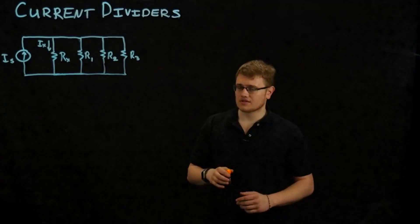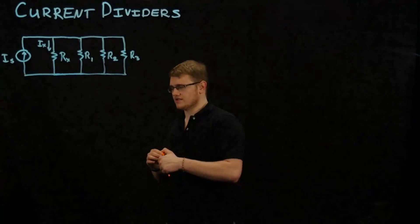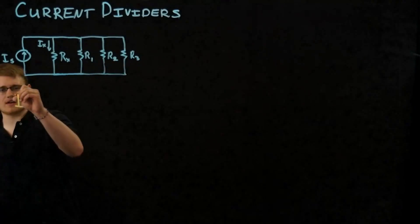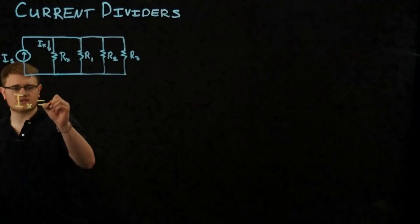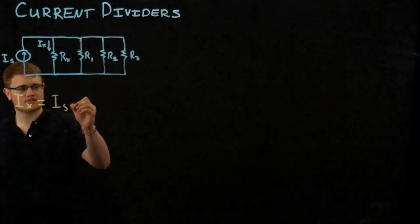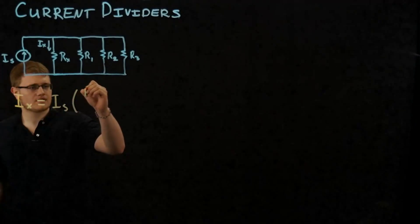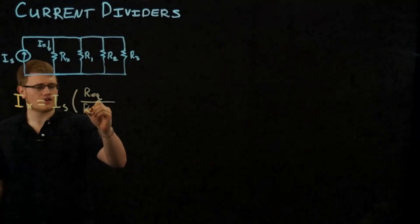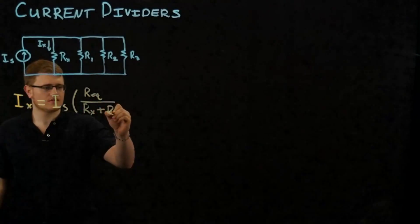Well, there is a formula for this, and it is called the current divider formula. It goes a little something like this: We have Ix, which is equal to Is times R equivalent over Rx plus R equivalent again.